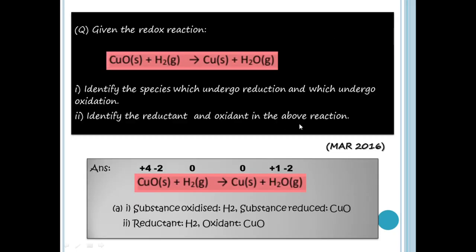Given the redox reaction from March 2016: CuO + H2 giving Cu + H2O. Identify the species which undergo reduction and which undergo oxidation. Identify the reductant and oxidant. Note: reductant is the reducing agent and oxidant is the oxidizing agent.